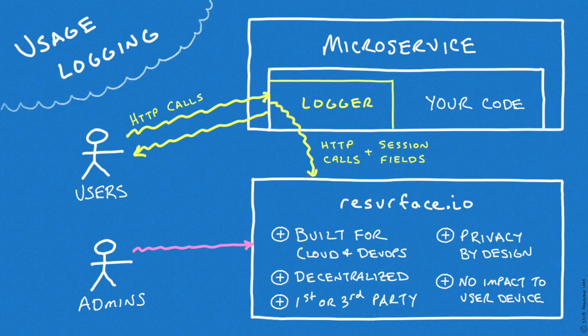With Resurface.io, usage logging is done by adding a logger library into the application, just like any other library that the application might use. This logger library selectively provides HTTP and user session data, either to Resurface.io as a third party, or to first-party private infrastructure. Usage logging has no impact to the user device and can't be blocked by an ad blocker, since this all happens in the cloud. Resurface.io incorporates a privacy-by-design philosophy and has responsible protections for the personally identifiable information that is intentionally collected. We believe usage logging pairs nicely with popular solutions for server logging, error logging, and even traditional user monitoring. We don't want to displace your existing logging solutions, only to extend your visibility by responsibly collecting usage data.